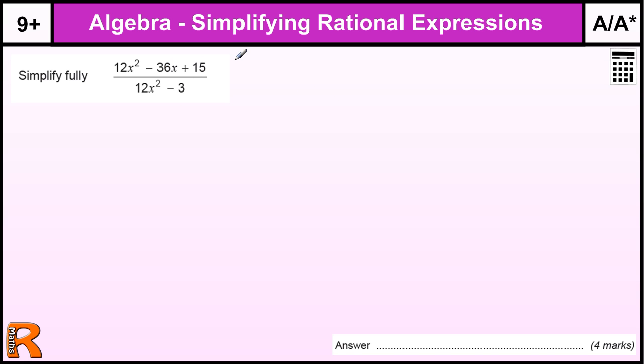Looking at the top one, 12x squared minus 36x plus 15. Now, with that one, we probably should think about is there a number that goes into all these, because these are all big numbers anyway. So let's think about a number that goes into all these. 3 definitely goes into all of them.